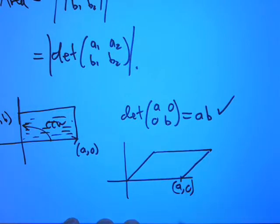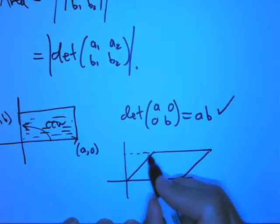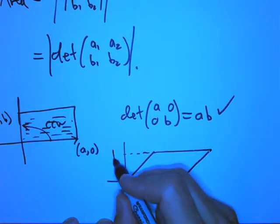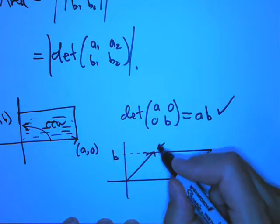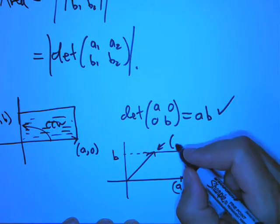But now this vector is some other vector. It's like maybe, what is it now? It's now B1, B2. And that was B2.